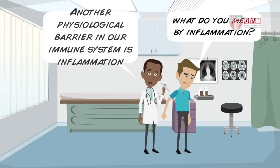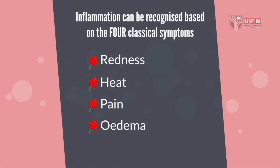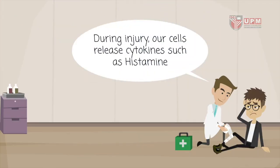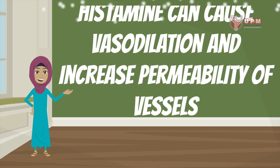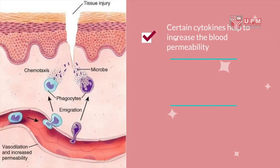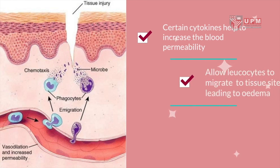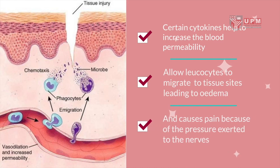Another physiological barrier in our immune system is inflammation. Inflammation can be recognized based on four classical symptoms: redness, heat, pain, and edema. During injury, our cells release cytokines such as histamine. Histamine can cause vasodilation and increase permeability of vessels. Certain cytokines help to increase blood permeability, allowing leukocytes to migrate to tissue sites leading to edema, and causing pain because of the pressure exerted on the nerve.